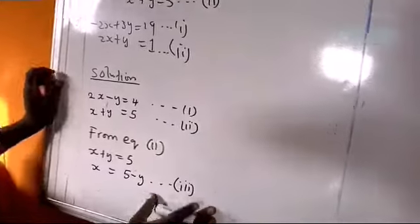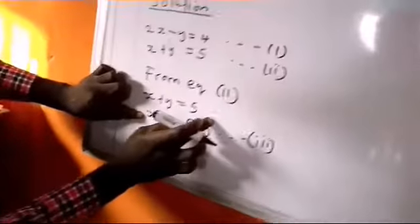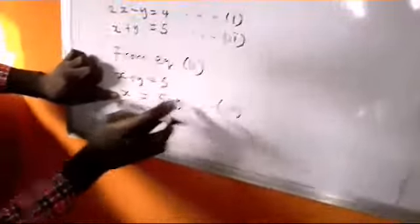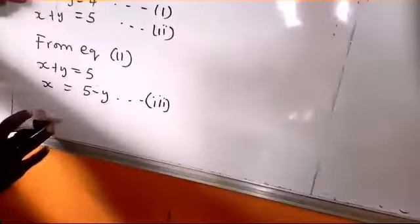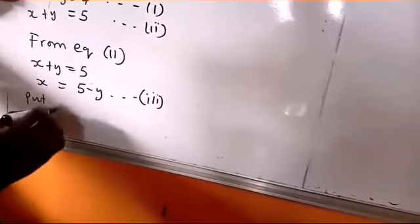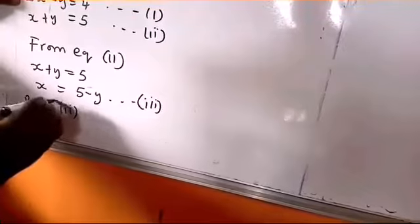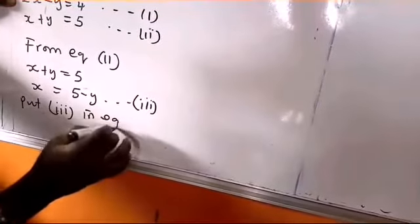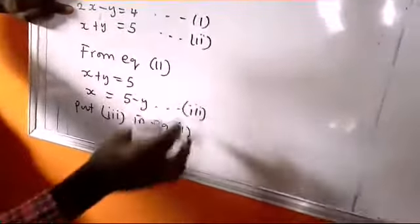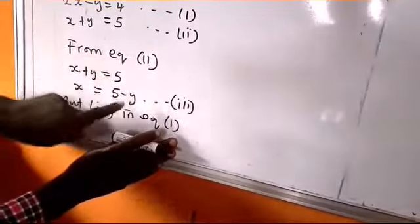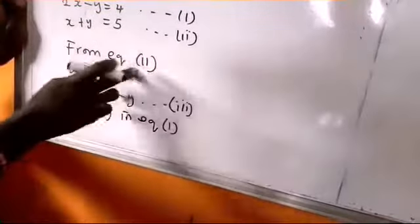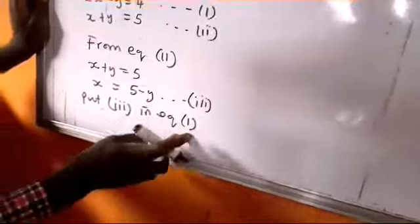Now, having done this, the value of x here, which is 5 - y, you are going to put it in equation one. That is, put equation three in equation one. Do not put it in equation two, because three is coming from two. So, you don't put three in two again. Put three in one.